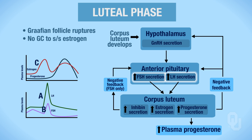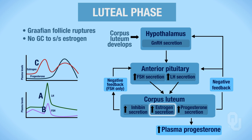Both FSH and LH will target the corpus luteum. When they target the corpus luteum, that's going to cause the synthesis and secretion of inhibin, which once again only turns off FSH secretion. FSH and LH, when they target the corpus luteum, will also cause estrogen secretion, and I'm going to represent this as D on your diagram.